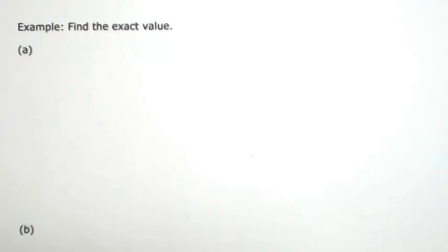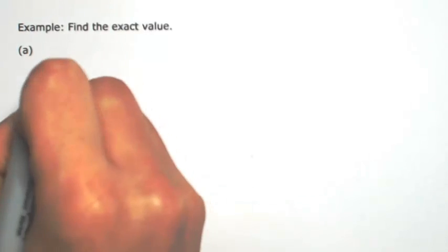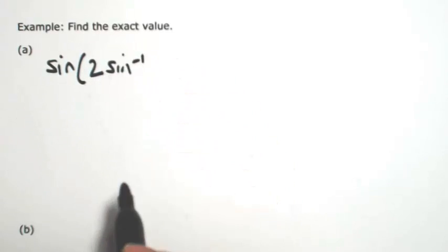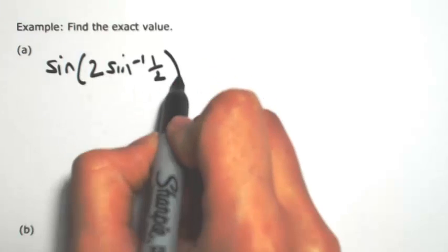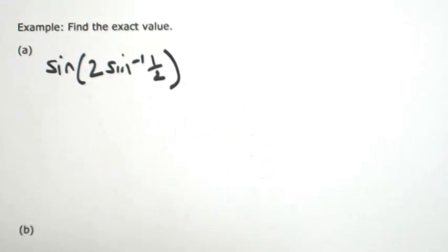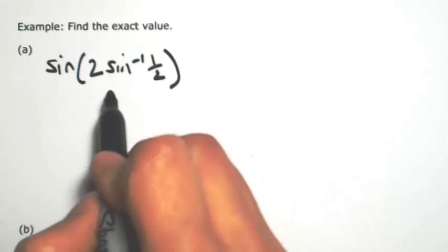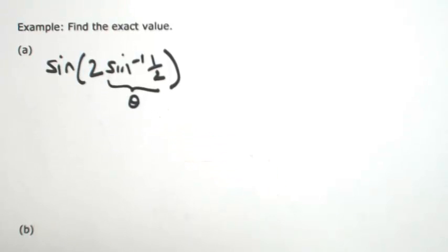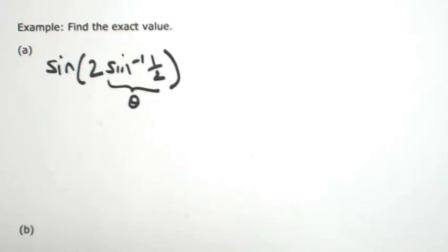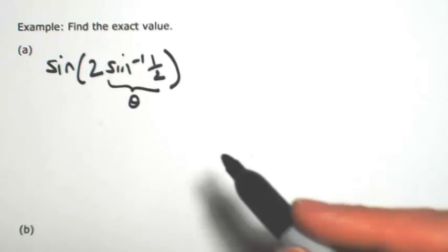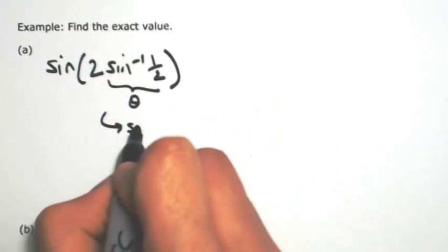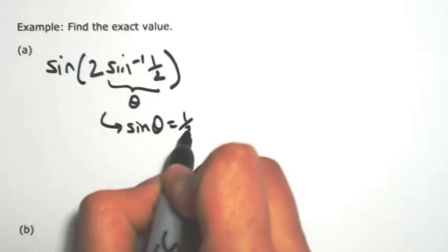Let's find the exact value of the sine of 2 times the inverse sine of 1 half. Recall that inverses are just angles, so this inverse sine is just some angle, and we call it theta. And it's actually one of the ones that we do know, because 1 half is one of our y values on the unit circle. So I'm going to rewrite this as simply the sine of theta being 1 half.